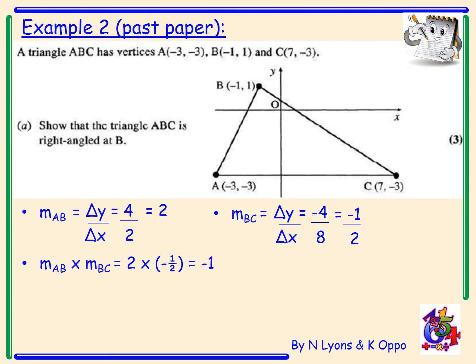Now multiplying the two gradients together. I've got the gradient of AB times the gradient of BC equals 2 times minus 1 half, which equals minus 1. I now have to look by a statement. Because the gradient AB times the gradient BC equals minus 1, this means that the lines are perpendicular. And that means for this triangle, it is right angled at B.